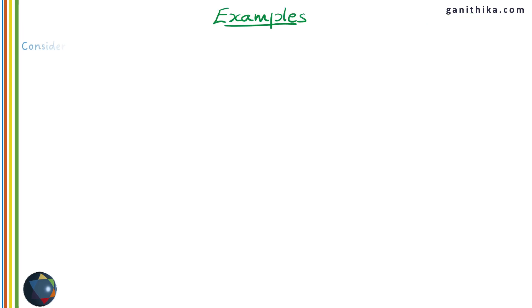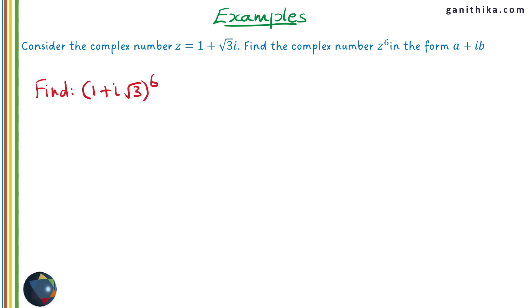Let's look at the first example. We take z = 1 + √3i and find its sixth power. We need to think whether to apply the theorem or just multiply — since it's a power of 6, multiplying manually would be a long process, so it's better to use the theorem. First, convert this complex number to polar form: we need the modulus and the argument.